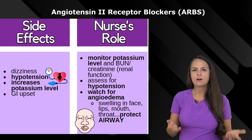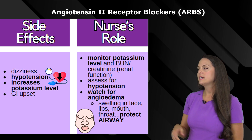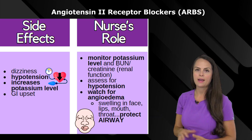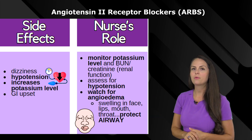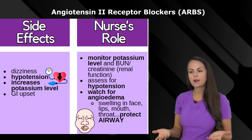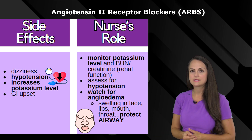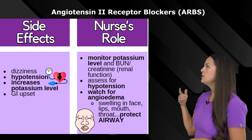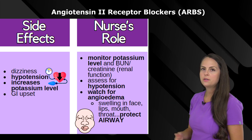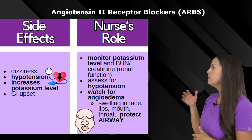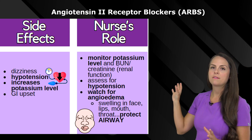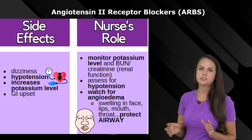The nurse's role involves monitoring the potassium level, because it can increase too high. You want to watch that especially in patients at risk for kidney disease, like patients with diabetes. Look at renal function — the BUN and creatinine — and assess blood pressure to make sure the patient is not experiencing hypotension.